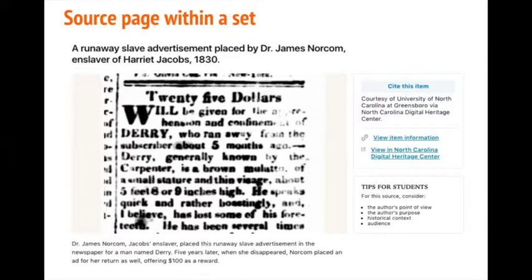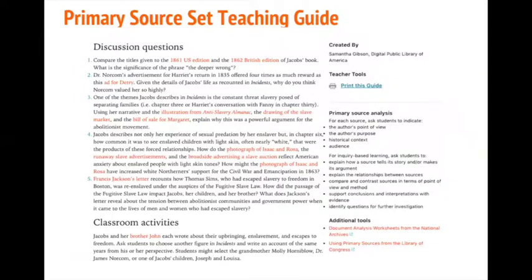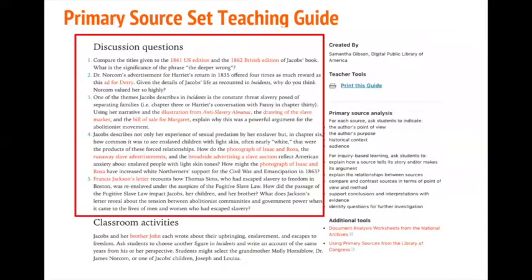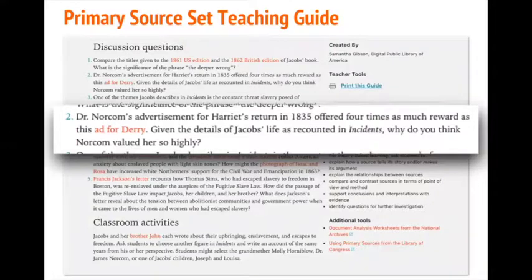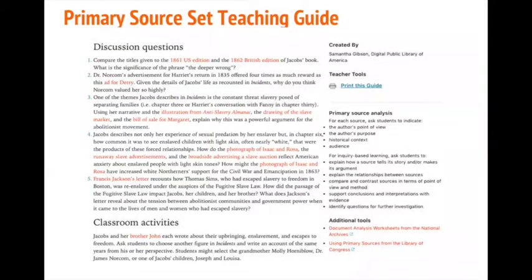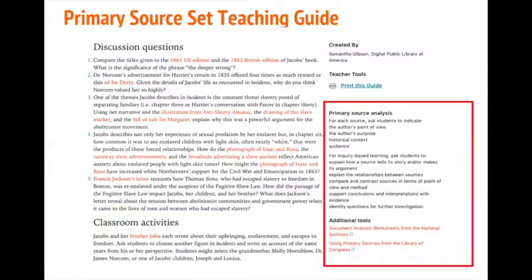The last major component of the sets is the teaching guide. On the teaching guide, you'll find a set of discussion questions referencing the sources in the set. For example, question two references the source we just looked at. It reads: Dr. Norcom's advertisement for Harriet's return in 1835 offered four times as much a reward as this ad for Derry. Given the details of Jacob's life as recounted in Incidents, why do you think Norcom valued her so highly? The phrase 'ad for Derry' is a link that brings you back to the source page for that item. Each teaching guide also has at least one classroom activity and an expanded list of primary source analysis prompts and resources on the right.